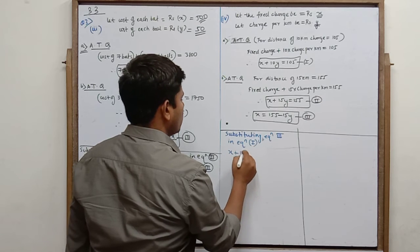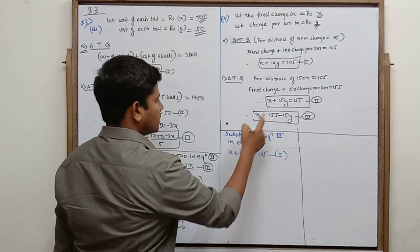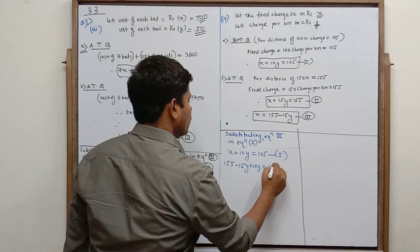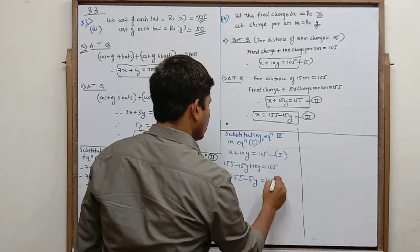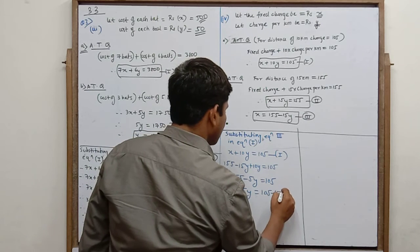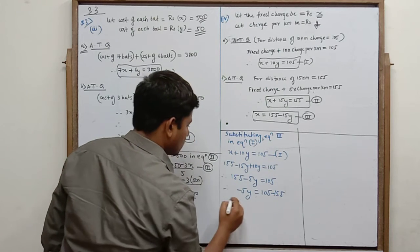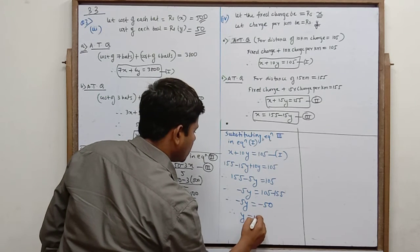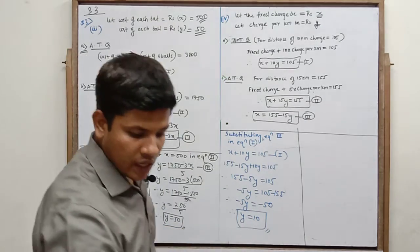Substituting equation 3 in equation 1: x plus 10y equals 105 becomes (155 minus 15y) plus 10y equals 105. So 155 minus 5y equals 105, giving minus 5y equals 105 minus 155, so minus 5y equals minus 50, therefore y equals 10. Charge per kilometer is rupees 10.